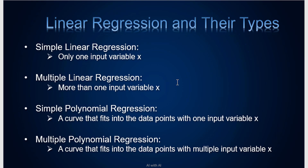The second type is multiple linear regression, where we consider more than one input. The third is simple polynomial regression, when the line starts taking a curve. And the fourth one is multiple polynomial regression, where a curve with multiple features. We are also going to see demos on these algorithms so you'll get the best insights. Make sure to watch this video till the end.